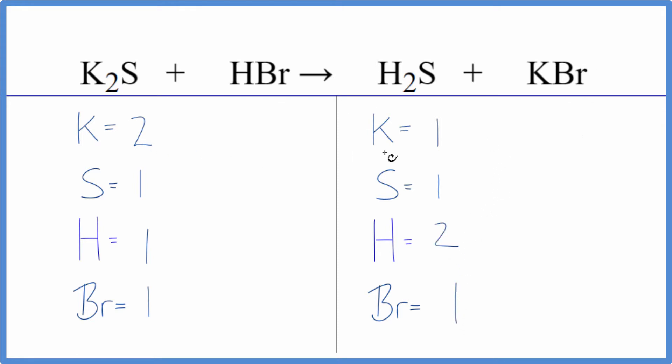Let's start by putting a two in front of potassium bromide. This two, it goes to everything. So we have one times two. That'll give us two potassiums. Those are balanced. One bromine times two. That gives us two of those.